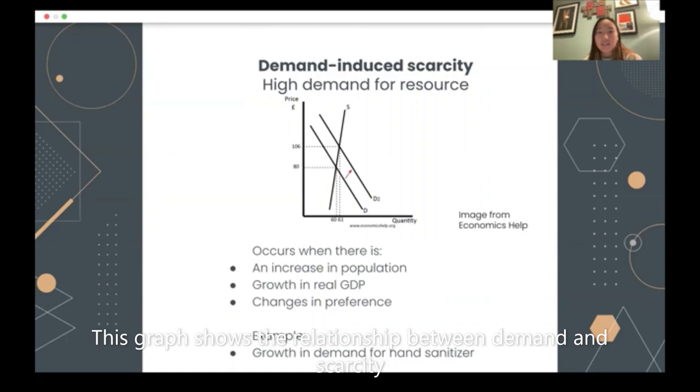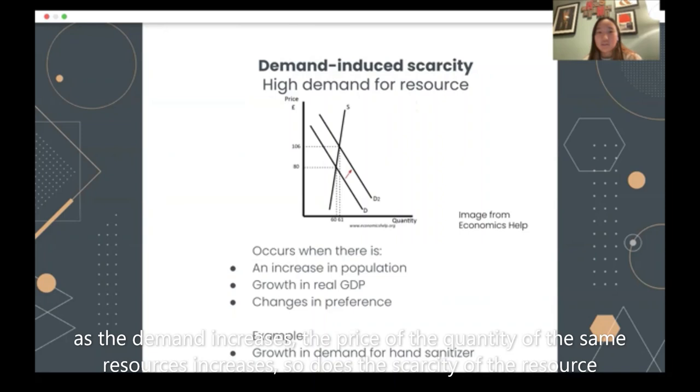This graph shows the relationship between demand and scarcity. As the demand increases, the price for the same quantity of the resource increases and so does the scarcity of the resource.